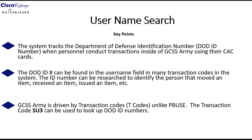The third key point is that GCSS Army is driven by transaction codes. This is different than PBIS. The transaction code Sierra Uniform 3, or SU3, can be used to look up DOD ID numbers.